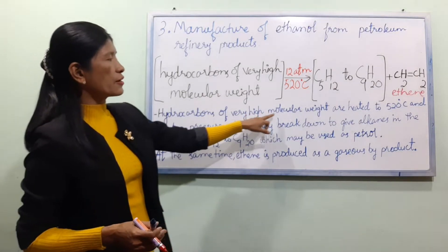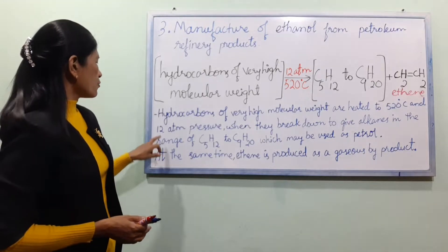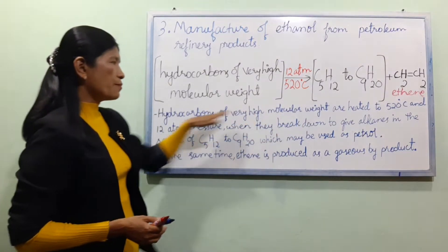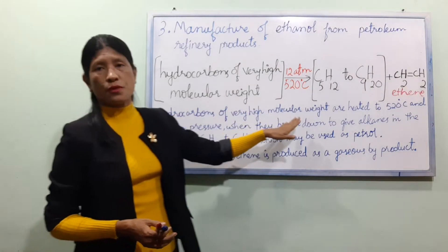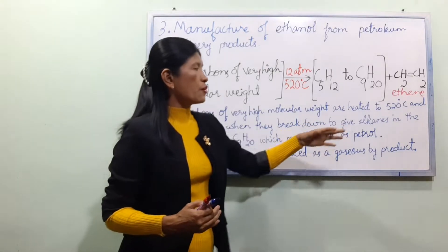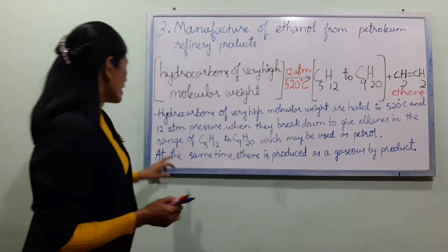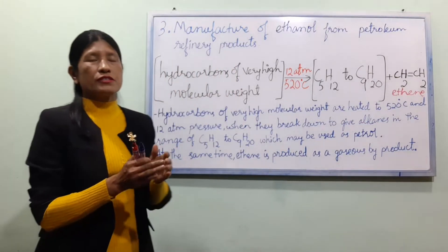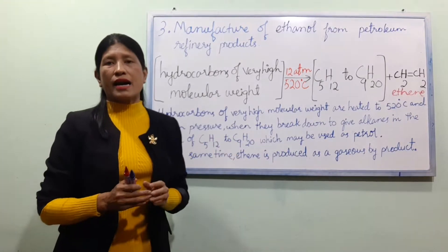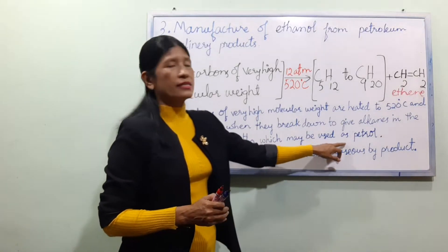Hydrocarbons with very high molecular weight are heated to 520°C and 1280 bar pressure. When they break down, large molecules break down to give alkenes in a certain range, and the hydrocarbon which may be used as petrol.